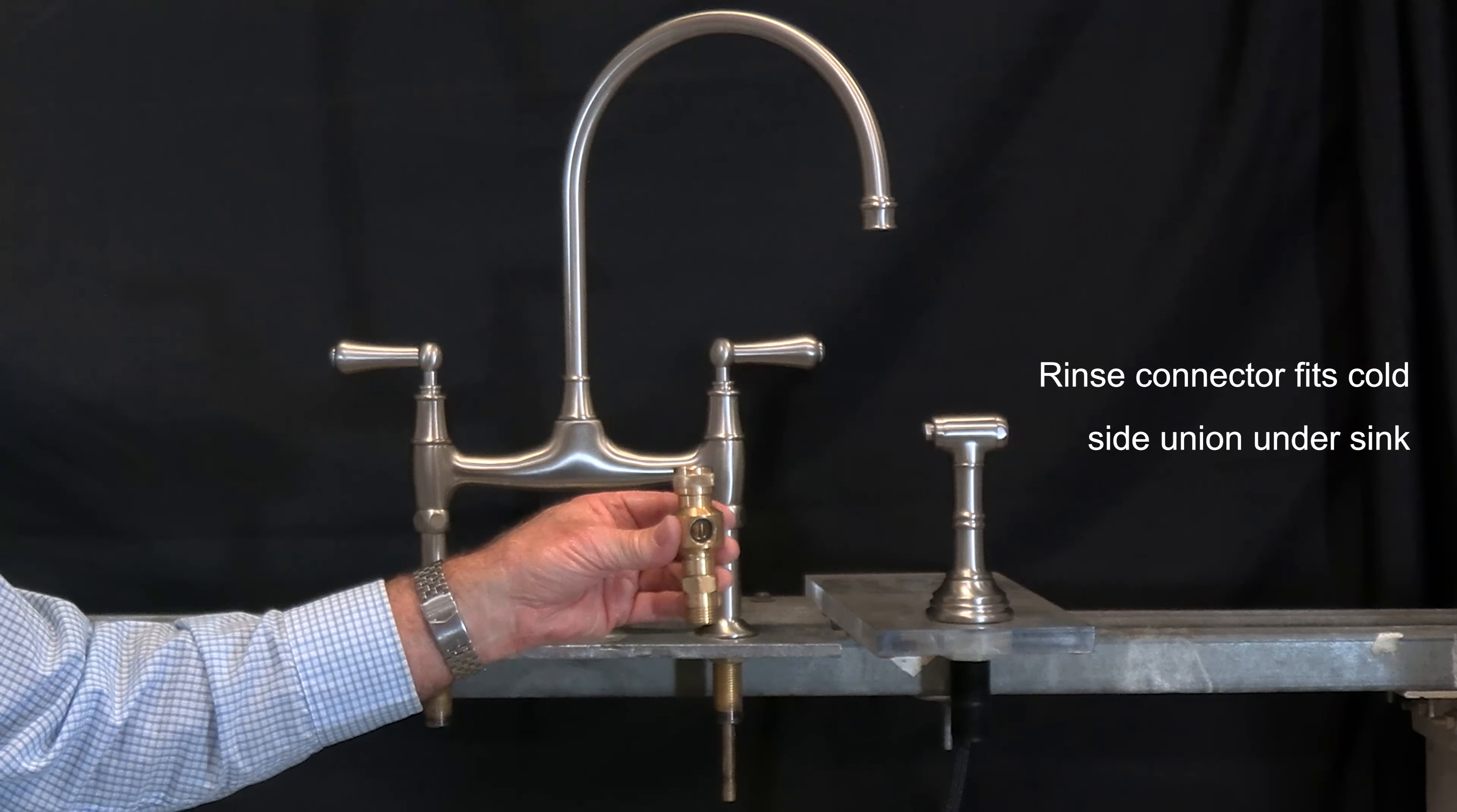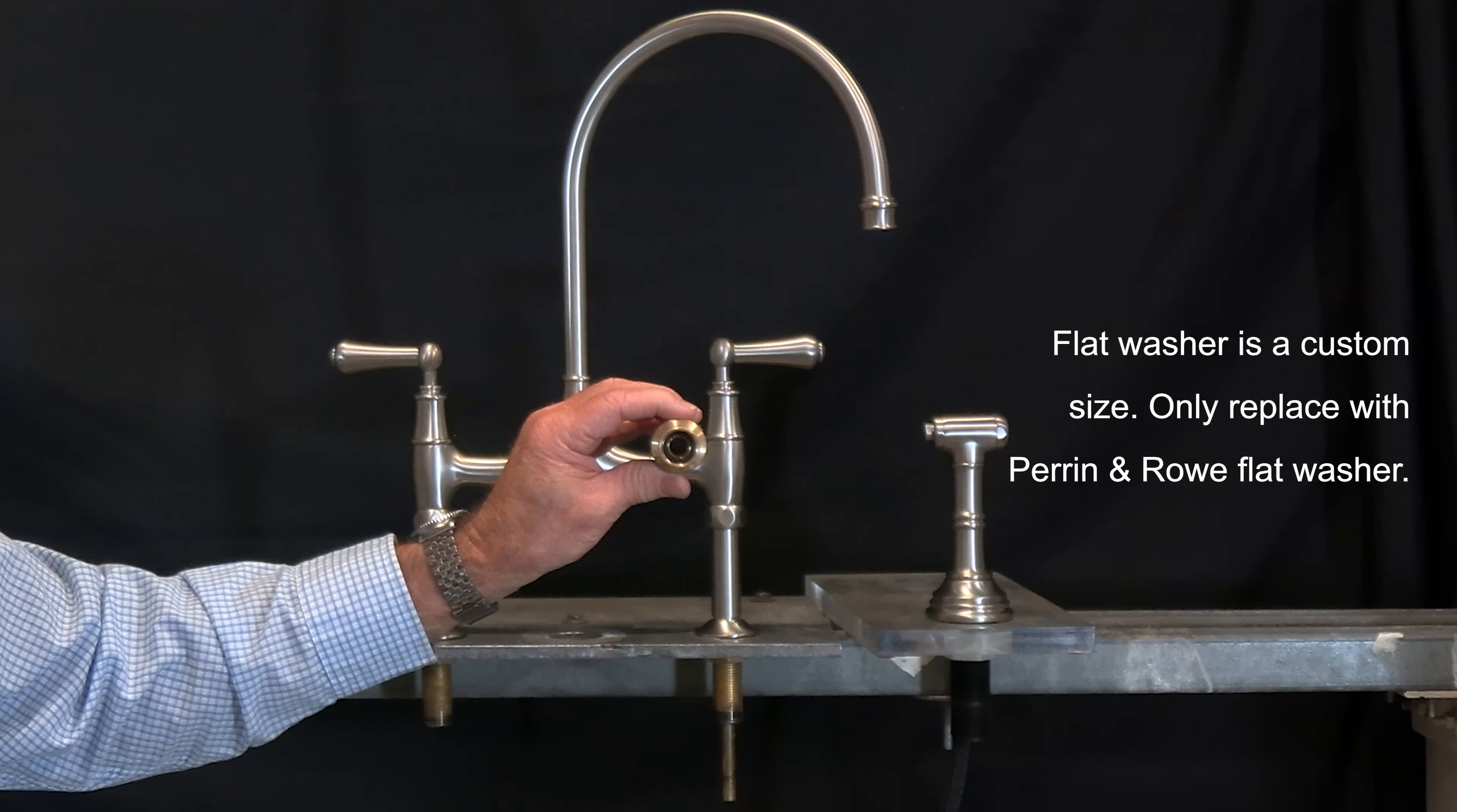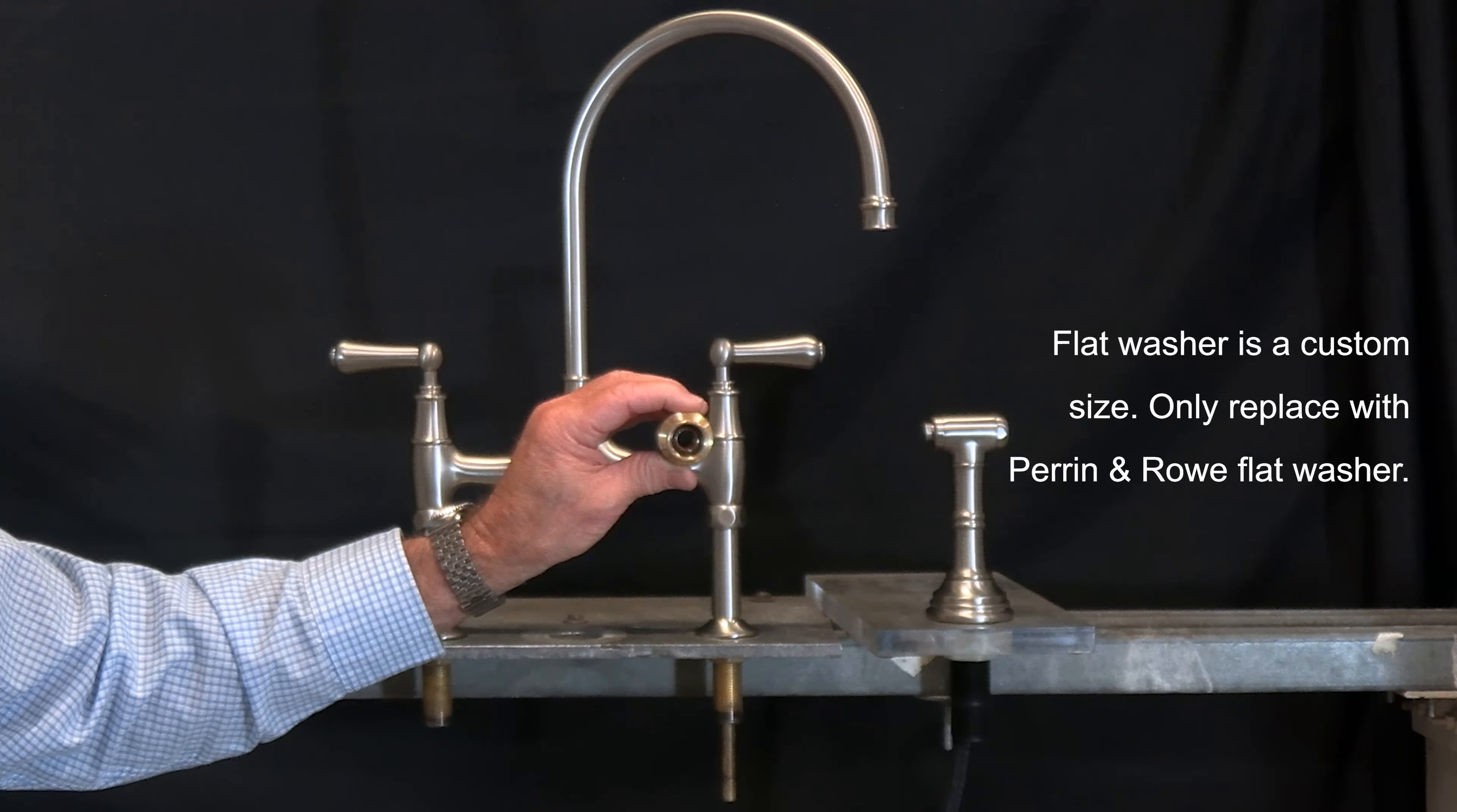The three things that you need to know. On the inside of the rinse connector is a specialized flat washer. This flat washer, if it happens to be lost, please call customer service for a replacement. You will not find a flat washer out in the marketplace to replace this piece. There are similar sized washers but they're all too large and will prevent the water from getting to the side spray.